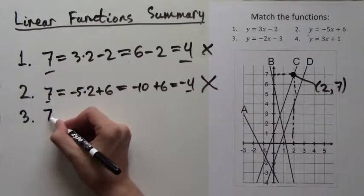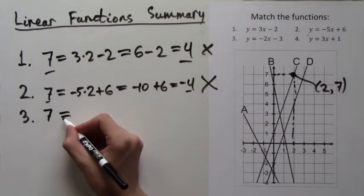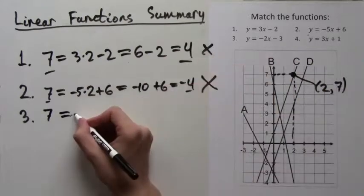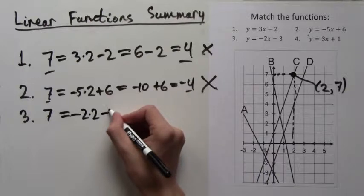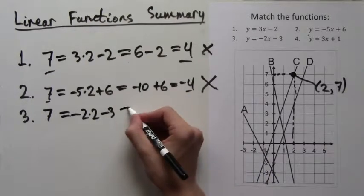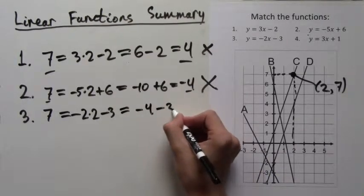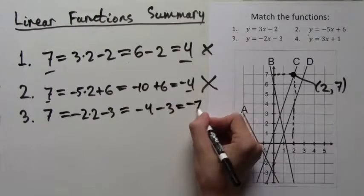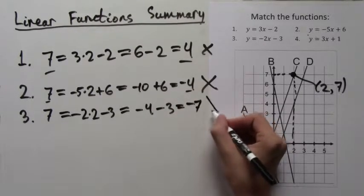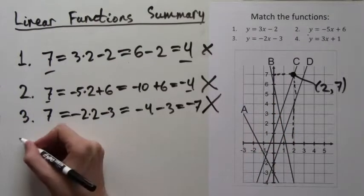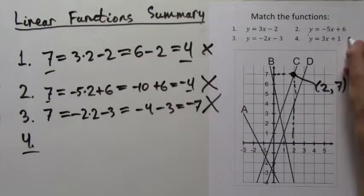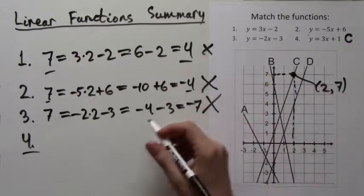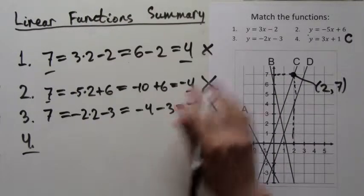Here's formula 3. y equals 7, negative 2 times x, which is 2. So negative 2 times 2, and then minus 3. This equals negative 4 minus 3, which is negative 7. But negative 7 does not equal 7, so obviously this formula is wrong. We are left with only one choice for C, and that is formula number 4. So we already know that 4 and C correspond to each other.